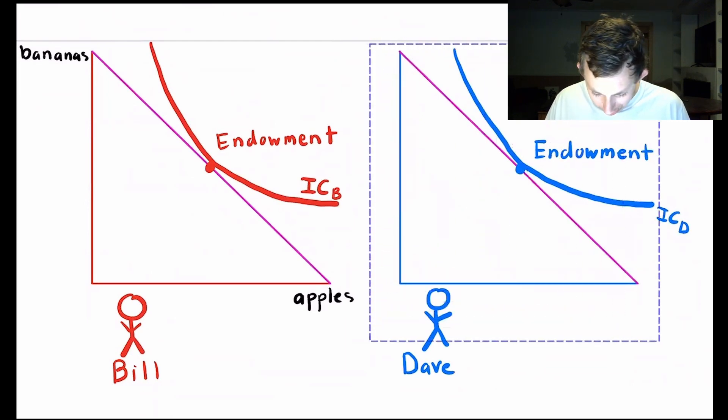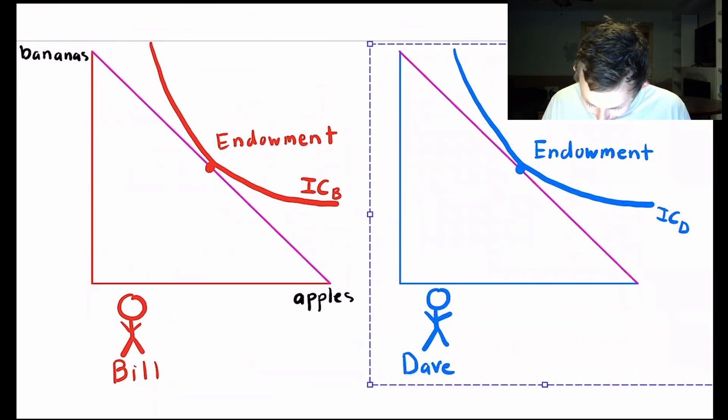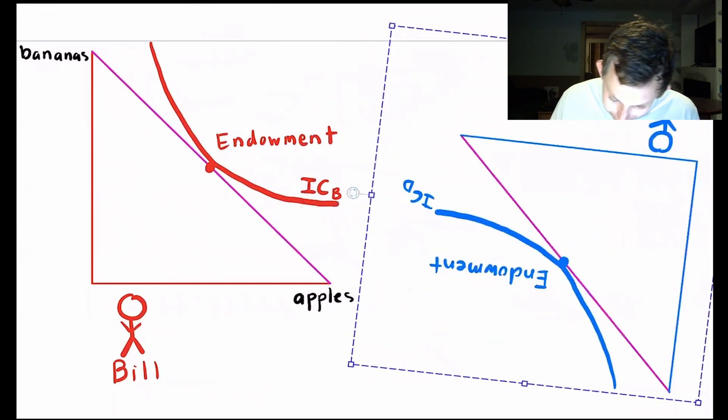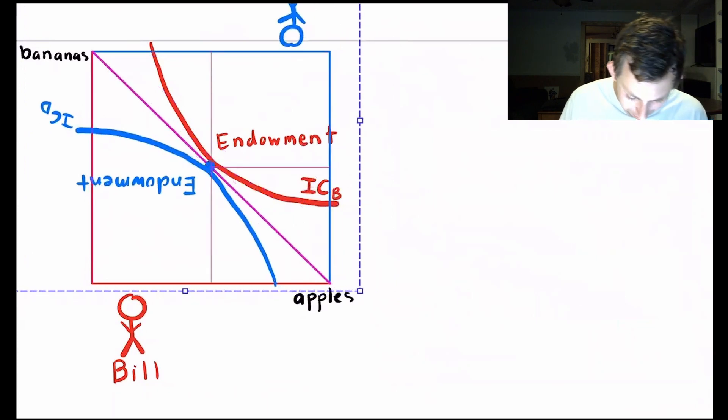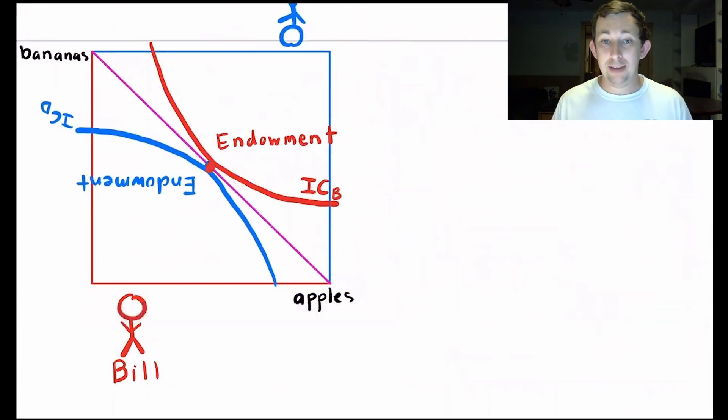Now all I'm going to do is take all of Dave's box and turn it 180 degrees and bring it over so that it meshes with Bill's box. And now I have drawn an Edgeworth box.